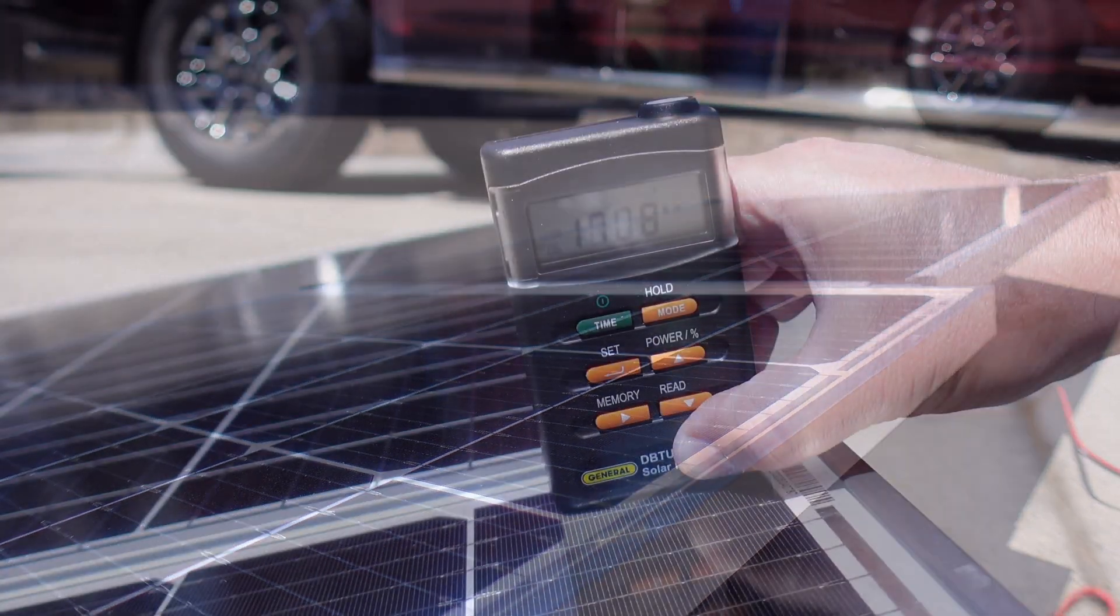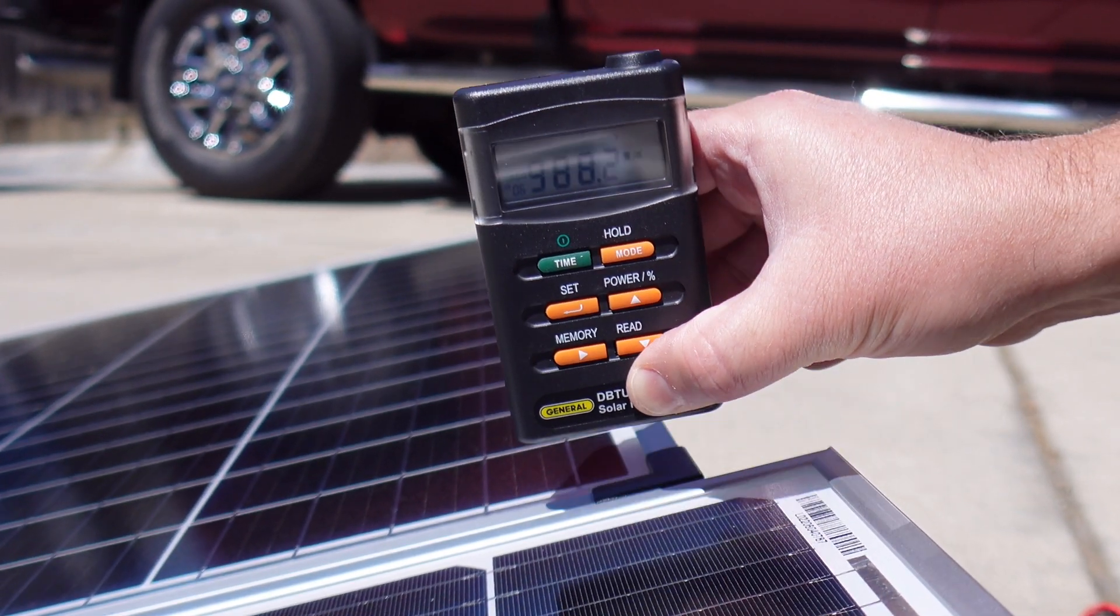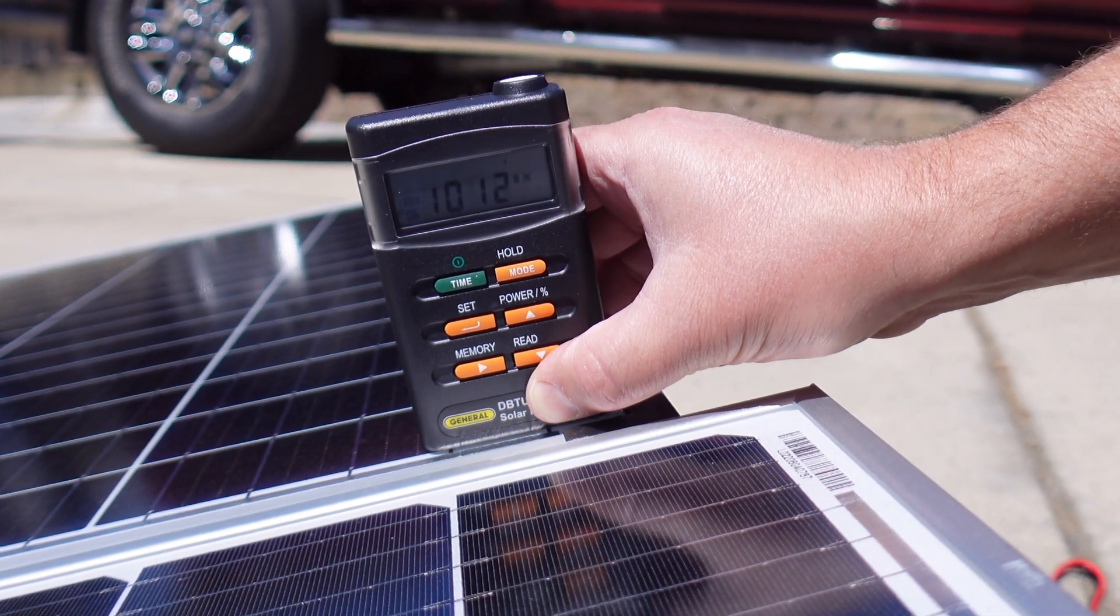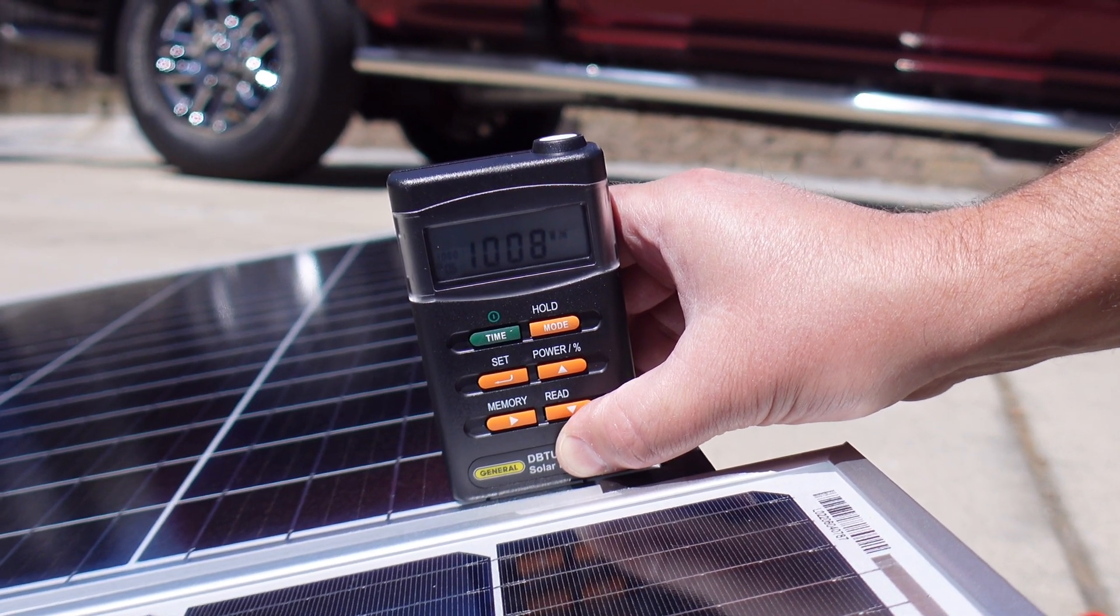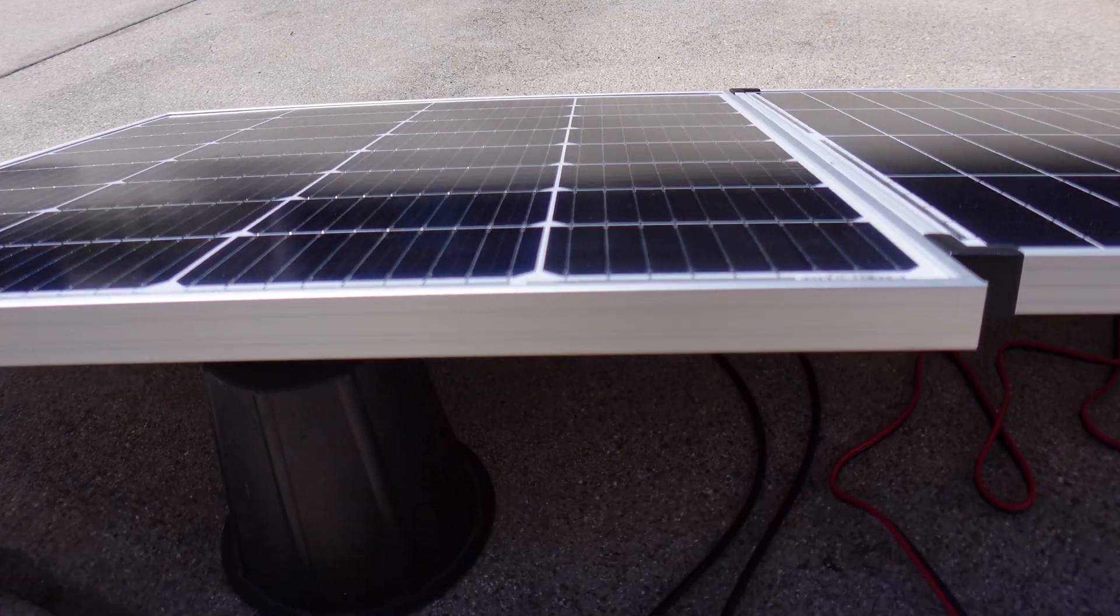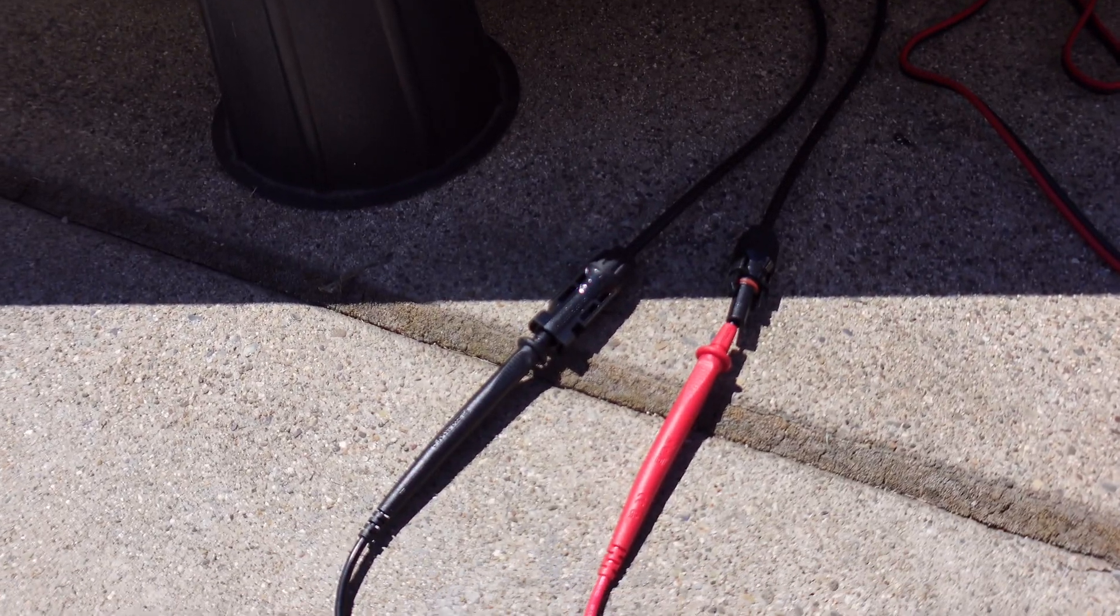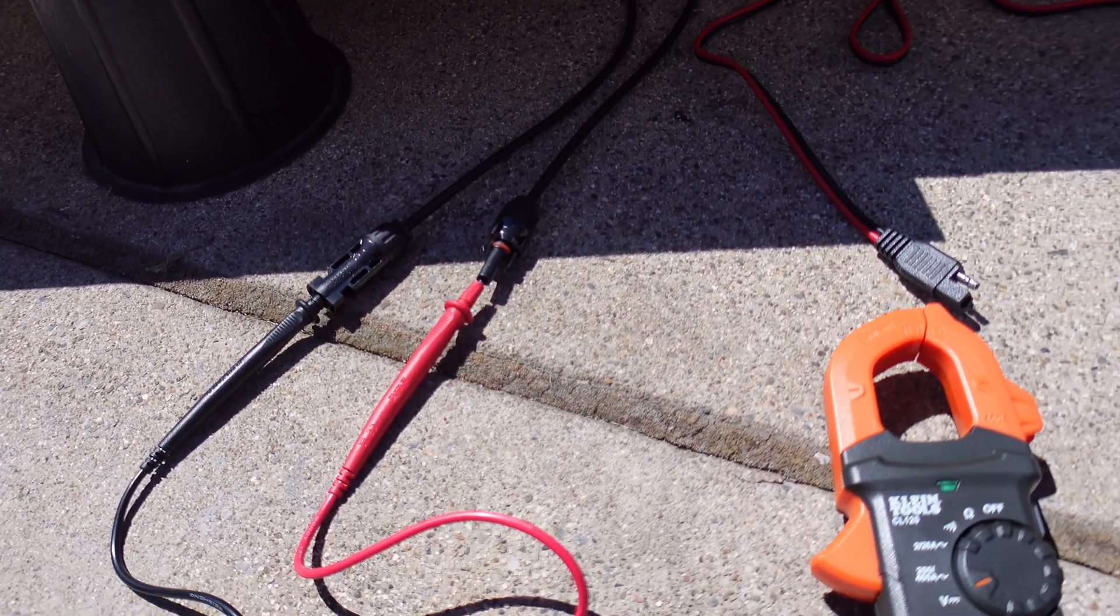I also made sure that the angle was exactly the same. Part of STC testing means that you should have at least a thousand watts per meter square of light coming onto the panels when you do your test, and as you can see here we're just over a thousand.